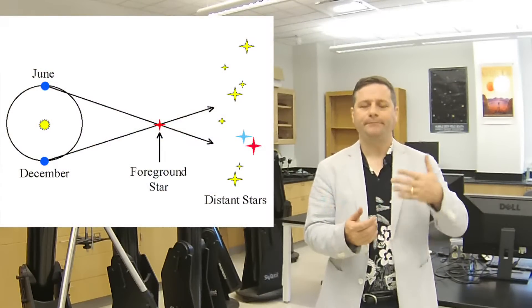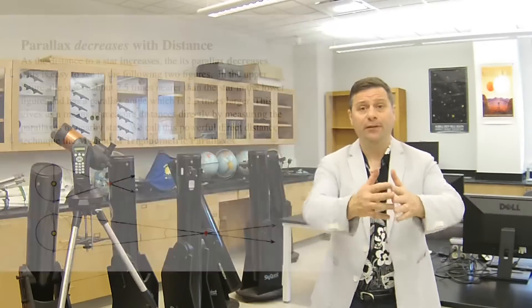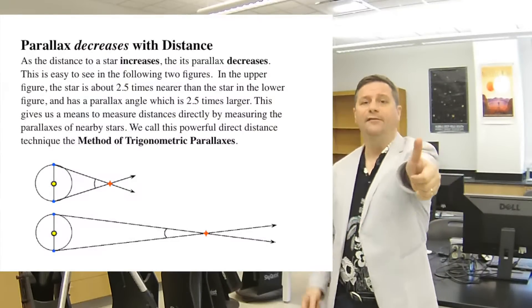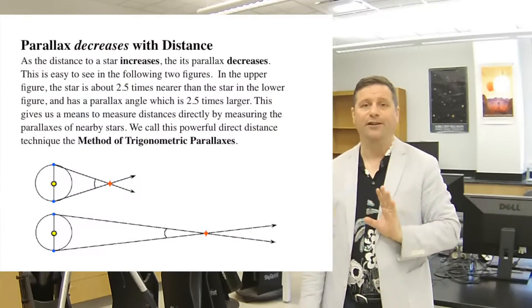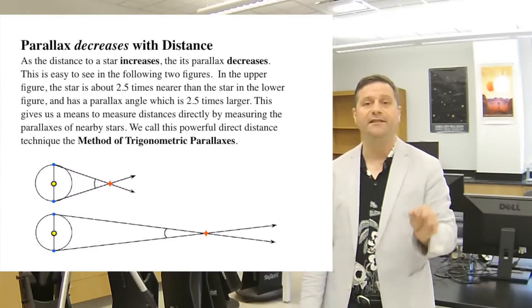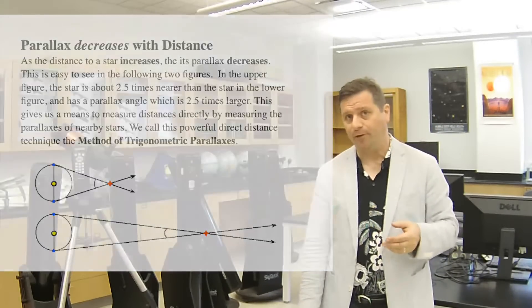If we have some nearby stars, they will have a big parallax shift, and if they're far they'll have a smaller parallax shift. The farther they are, the less the shift is, until it gets so far that it's imperceptible. But what's our baseline?